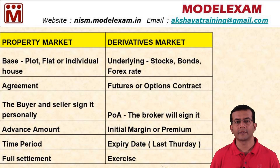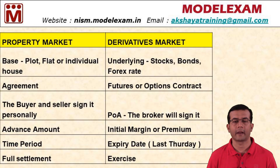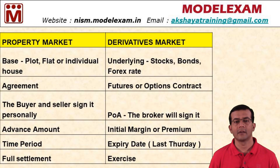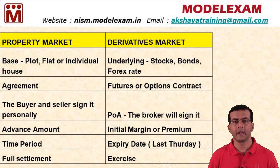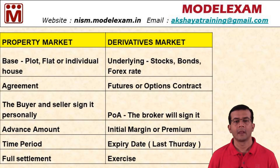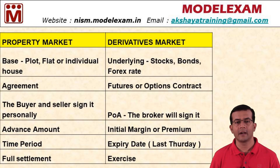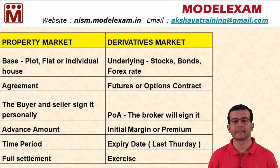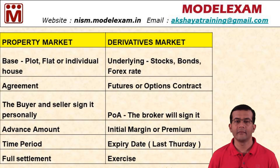Similarly, in the derivatives market we have something called the underlying — that is the technical word used. The underlying can be stocks, bonds, or forex rates. Since we are studying equity derivatives, we are concerned only about stocks and indices. So for equity derivatives, the underlying is stocks and indices.